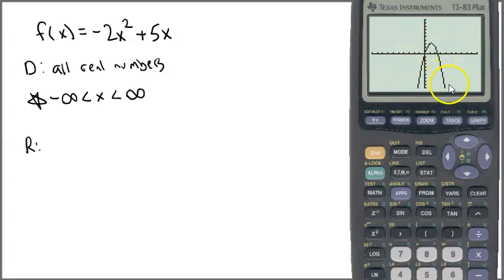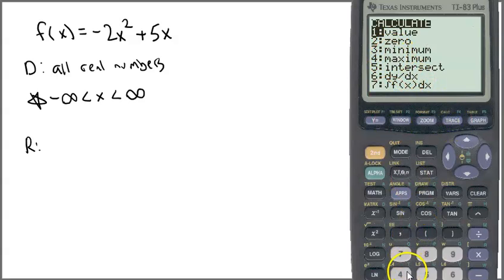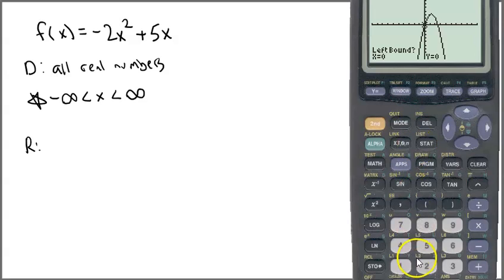So you can see the graph opens down and this point right there is what I want to know. The calculator actually helps me find this. To find this maximum point I hit second trace, I'm going to find the maximum. I'm going to pick two values of X that the maximum is between - I think it's between zero, so I'll hit zero and enter, and it looks like three to the right of it. Then I guess, just kind of trace up until I get there, I hit enter, it calculates.